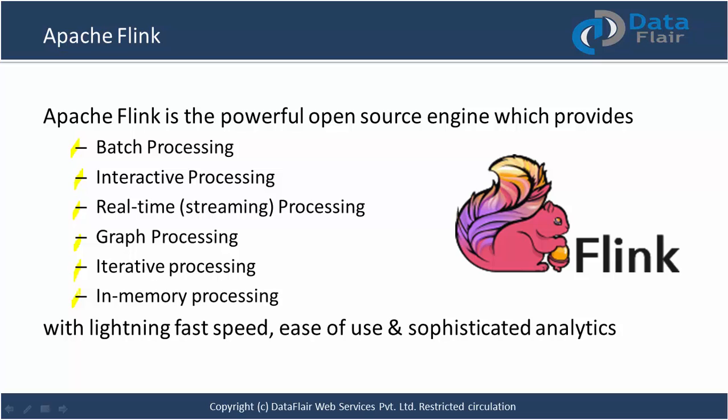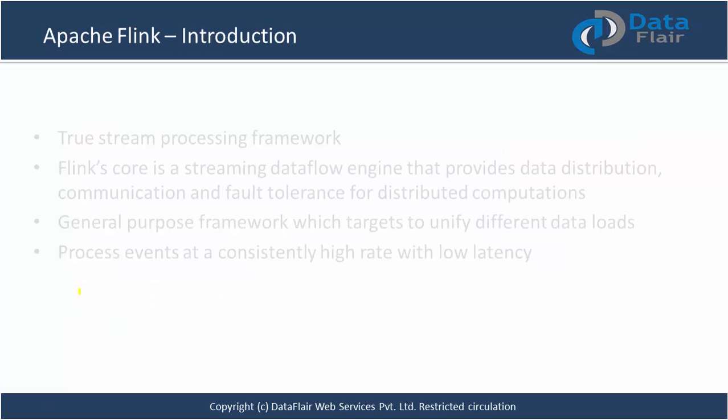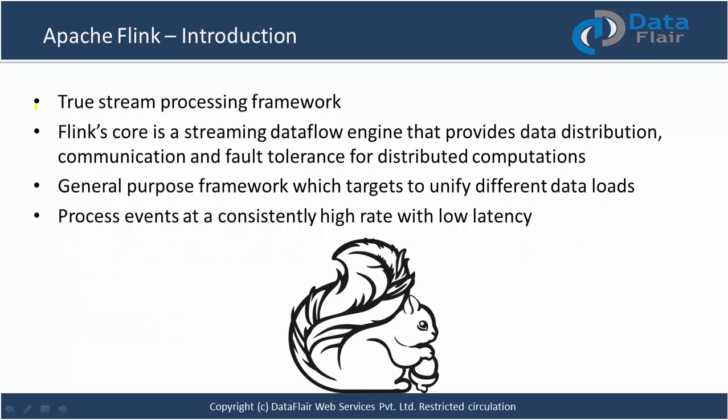Spark is 100 times faster than MapReduce, but Apache Flink is faster than even Spark. Flink is a true stream processing framework which can process a real stream of data in milliseconds.